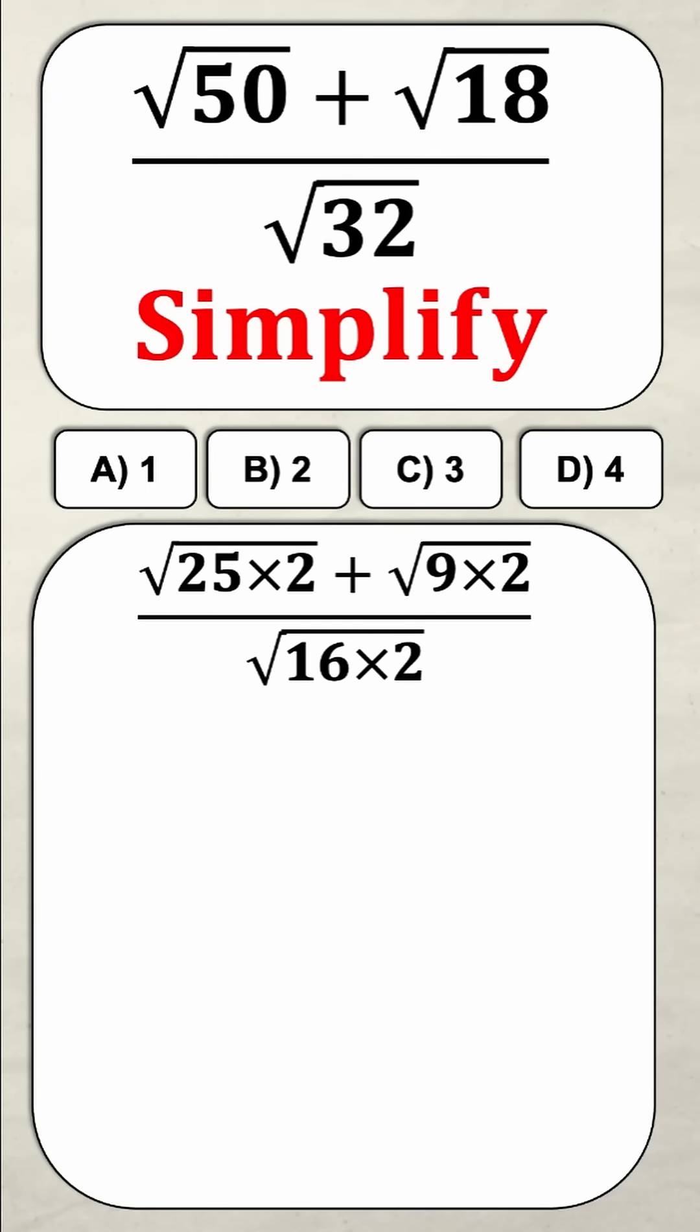It looks like this. So we have the square root of 25 times 2 which is obviously 50 plus the square root of 9 times 2 which of course is 18 and finally it's all over 16 times 2 under a square root which is of course 32.